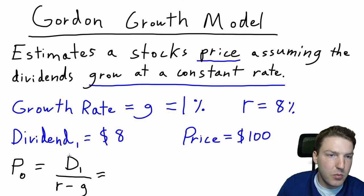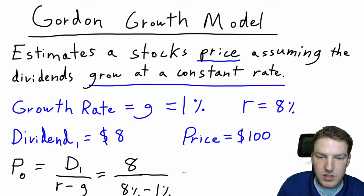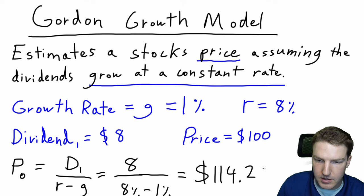This is the formula for the Gordon growth model down here. So the intrinsic value or the price at time zero of the stock is equal to D1, so the first dividend divided by the required rate of return minus the growth rate, which will just be the $8 divided by 8% minus 1%. And this gives us a value or an intrinsic value of $114.29.